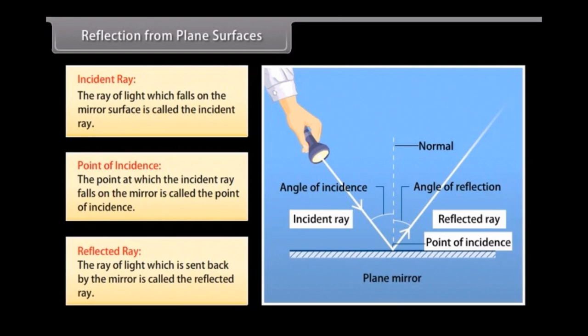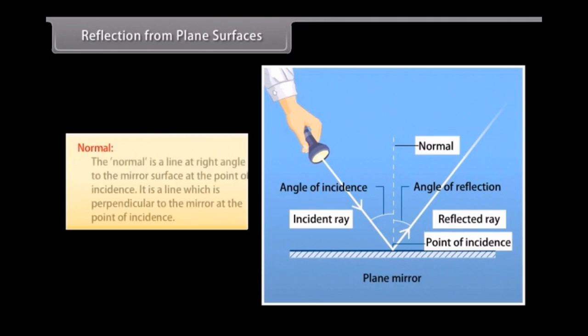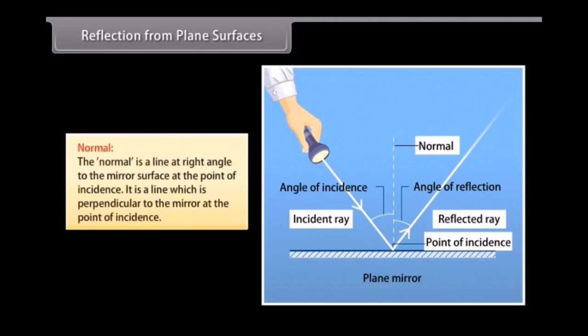Reflected ray is the ray of light which is sent back by the mirror. Normal: the normal is a line at right angle to the mirror surface at the point of incidence. It is a line which is perpendicular to the mirror at the point of incidence.